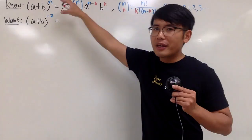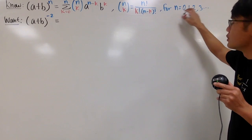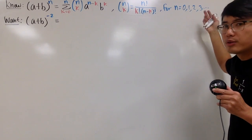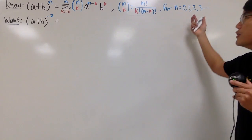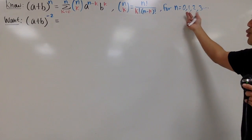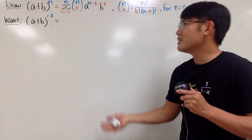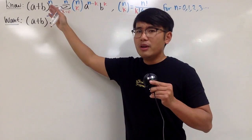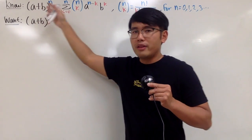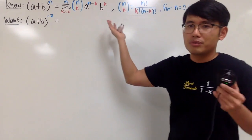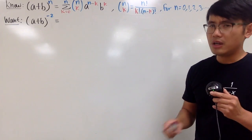Unfortunately, this right here is only true when n is equal to 0, 1, 2, 3, and so on. Some people may argue about whether to include zero, but if n is equal to zero, it's redundant — it's just 1 equals 1 — so that's not a big deal.